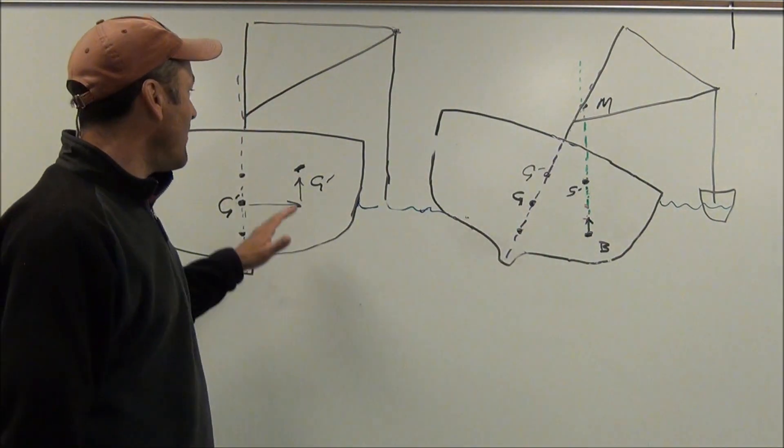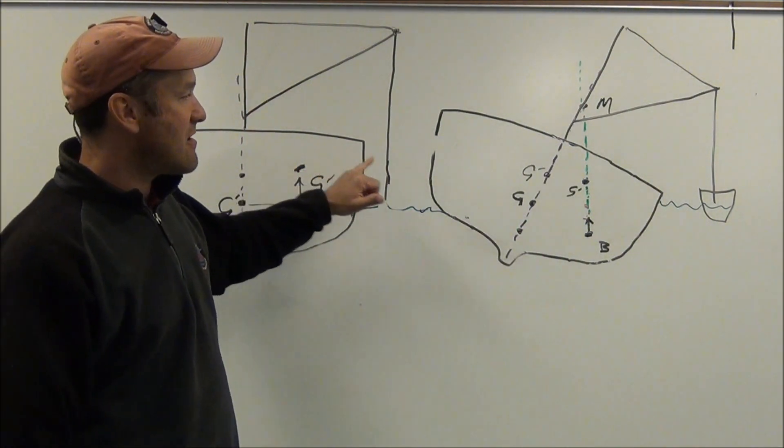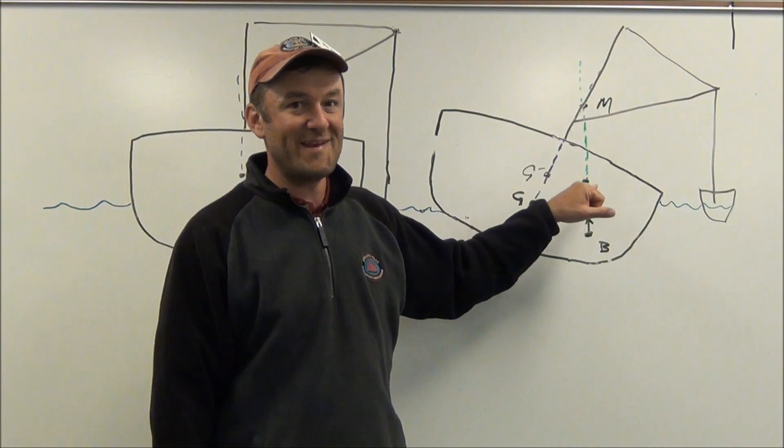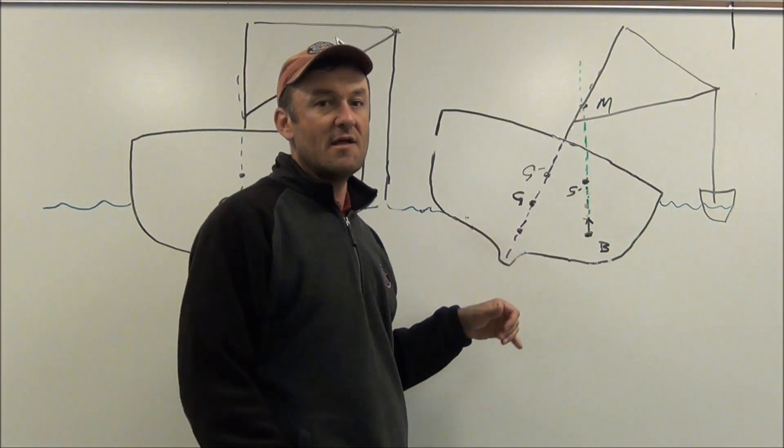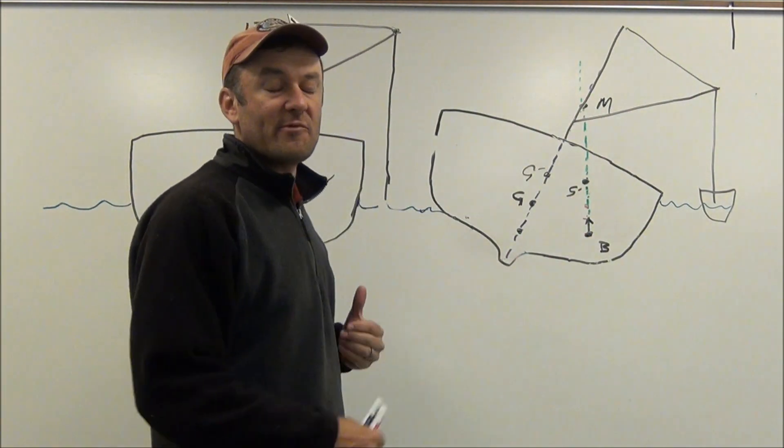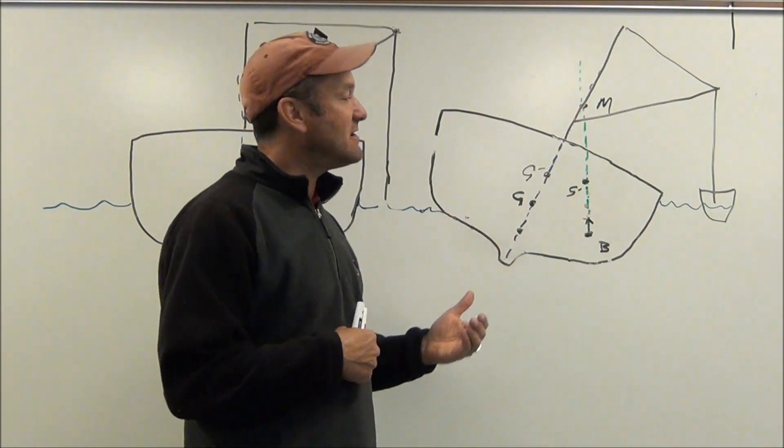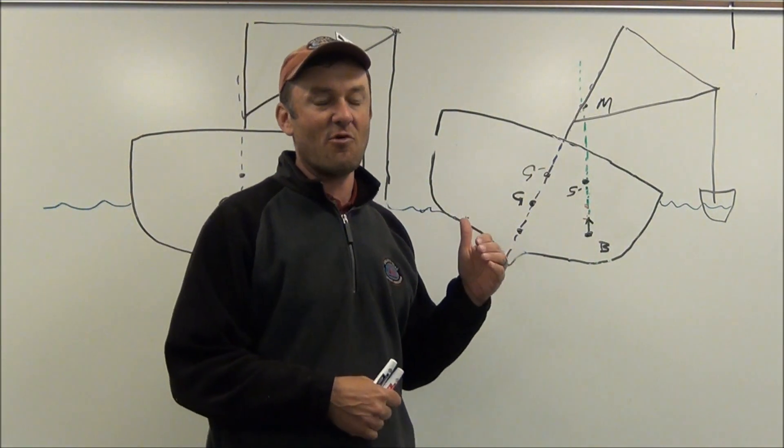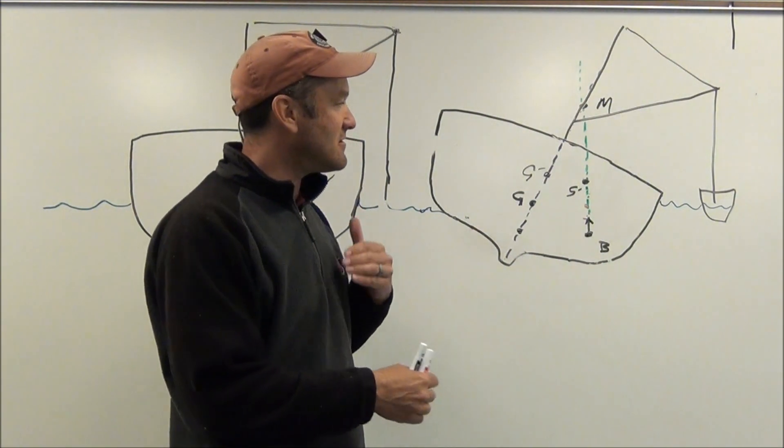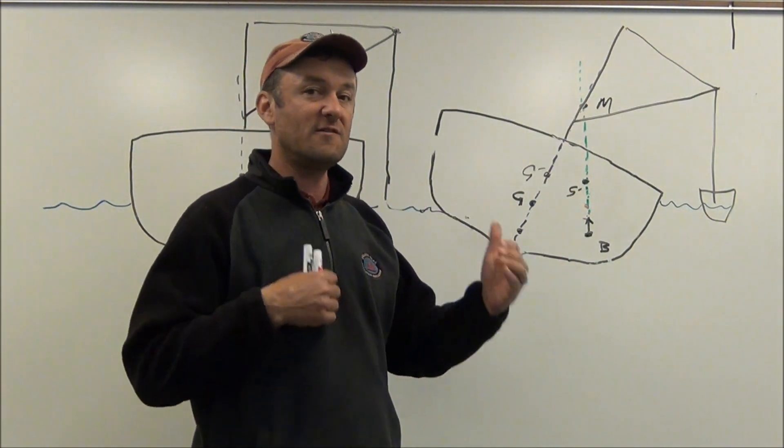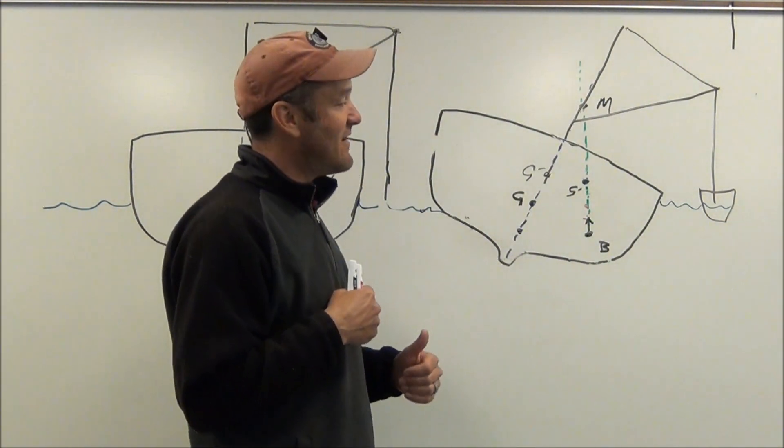So now if it shifted even further, then the righting arm would be negative. And as we saw in my earlier explanation, that could cause the boat to tip over because you have buoyancy and gravity working, instead of to balance each other or to right the vessel, it's working to capsize the vessel.